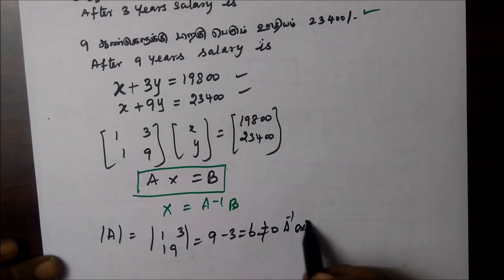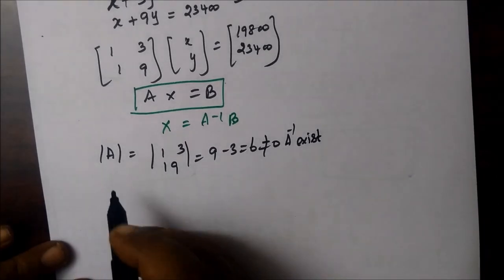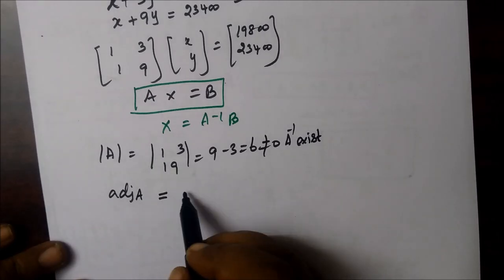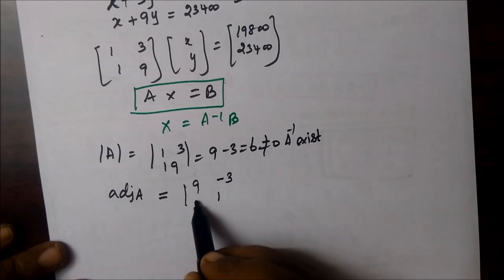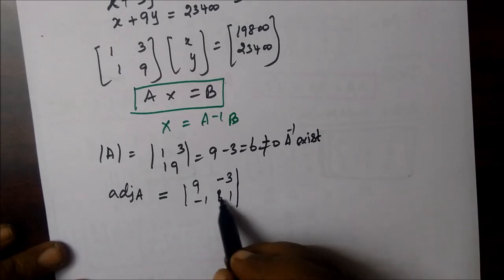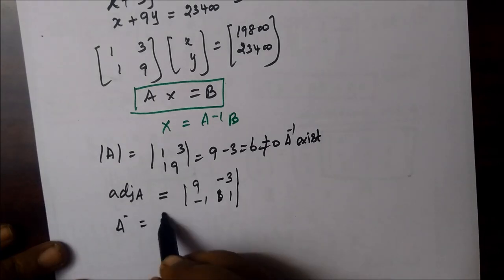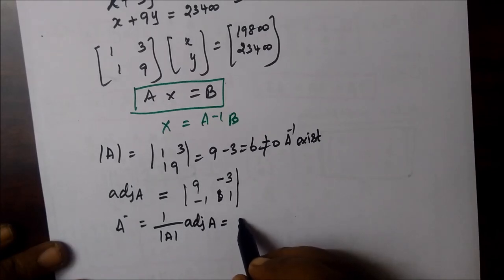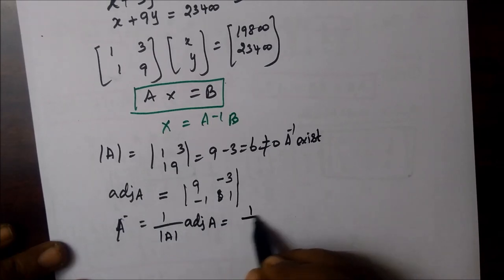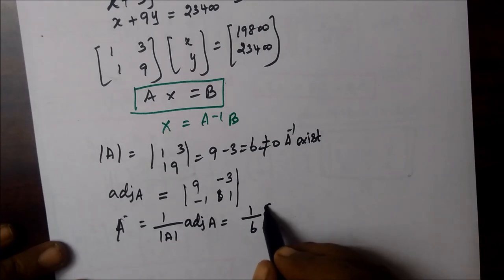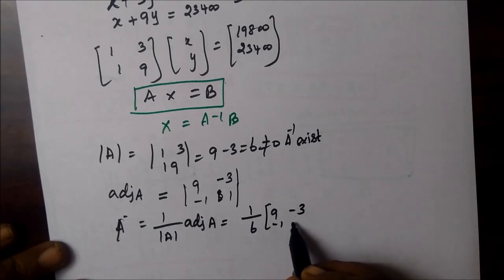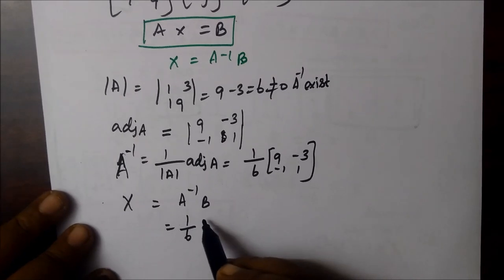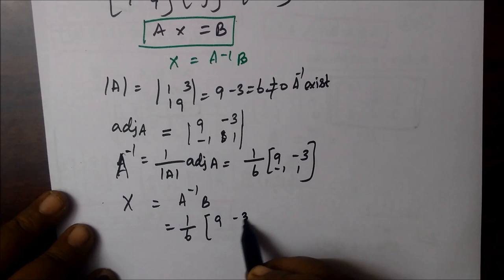We will write A inverse. The formula is 1 over determinant of A, into the adjugate of A. So A inverse equals 1 over 6, and the adjugate matrix is [9, -3; -1, 1].